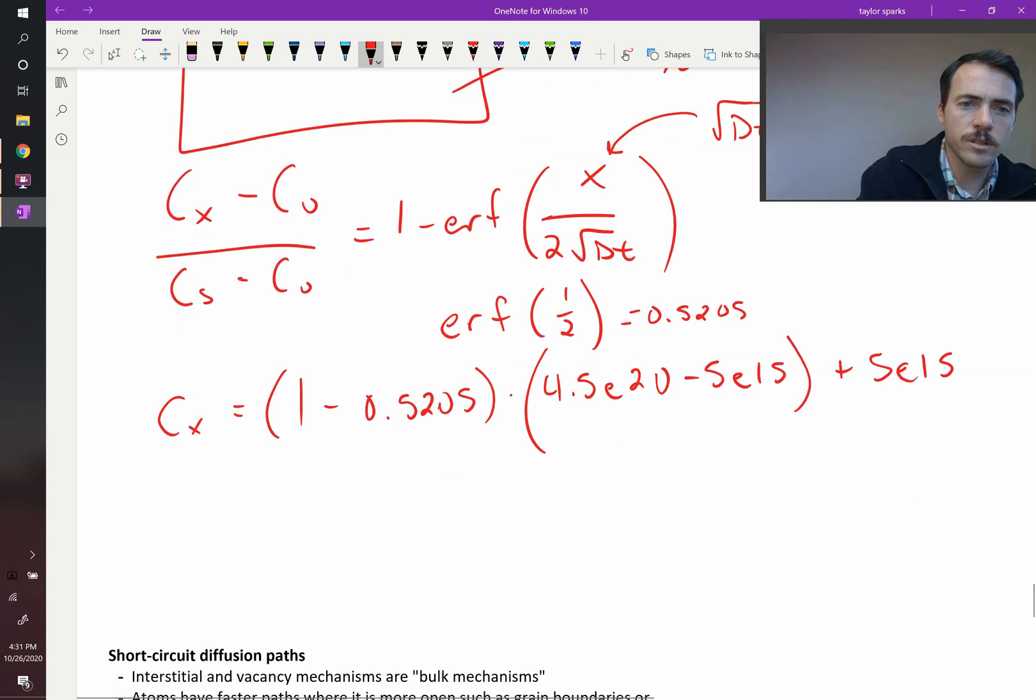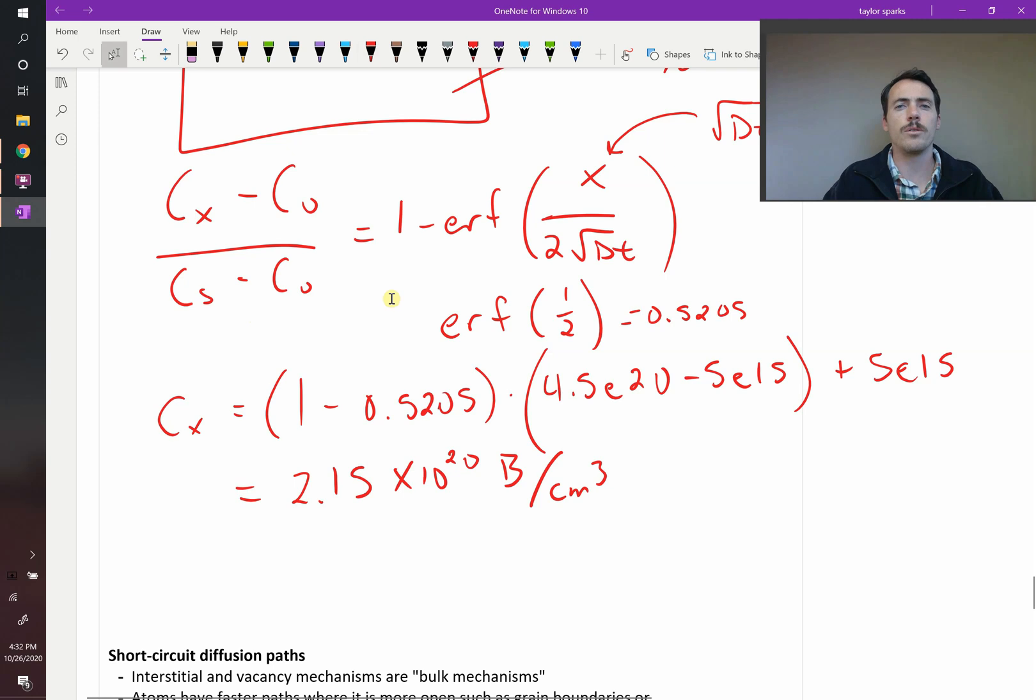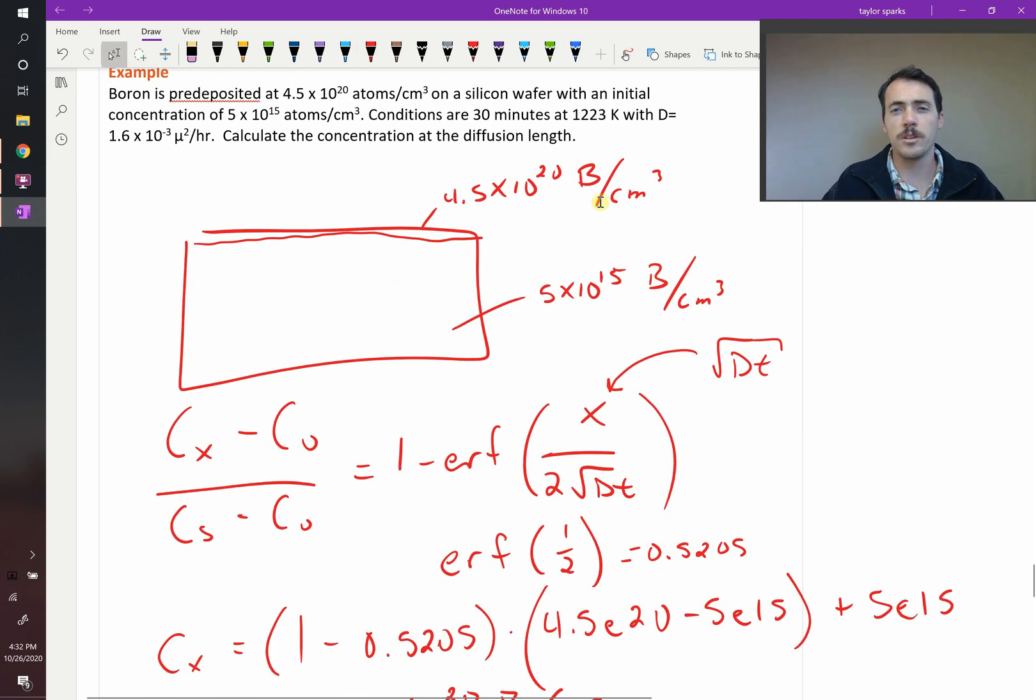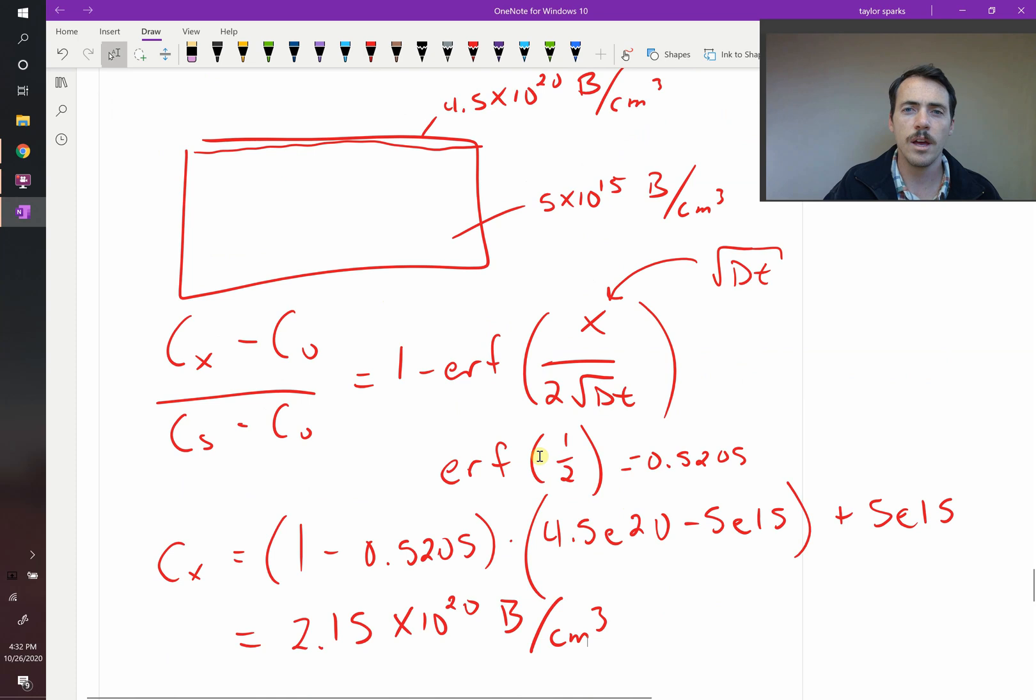When I plug all that in, I find that the composition at this distance is equal to 2.15 times 10 to the 20th boron atoms per centimeter cubed. So this was a relatively simple one because we didn't even need the diffusion composition or time because that was built into the x value. It's much more common that they'll say 3 microns in. If this was 3 microns, then you would need to plug in D and t and make sure that these units are the same and then solve for it, but this was a simpler one in this example. I have some other harder ones that I've worked out you can take a look at where we work it through for non-trivial examples.